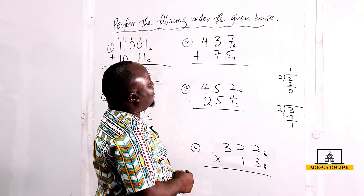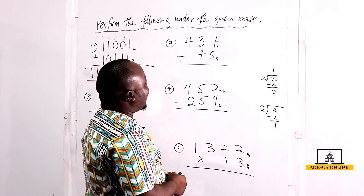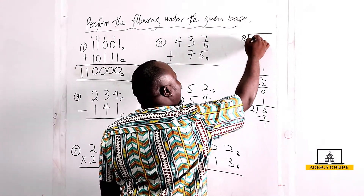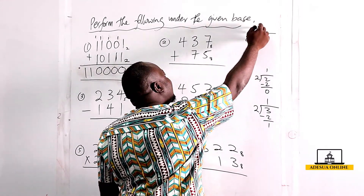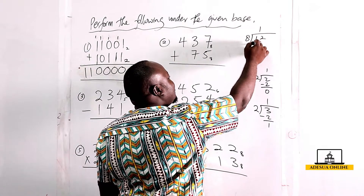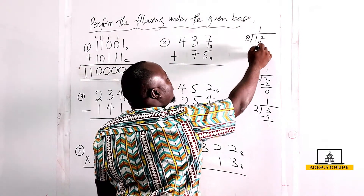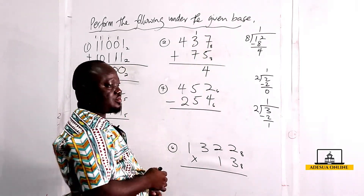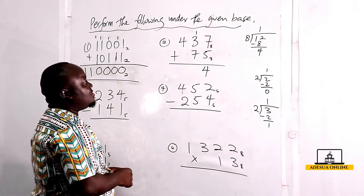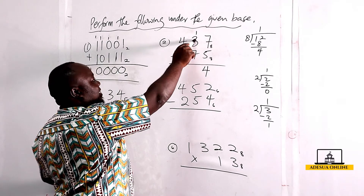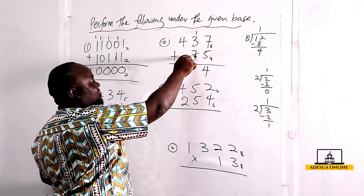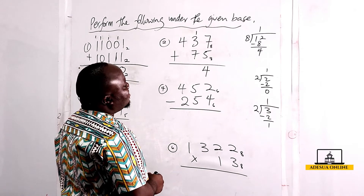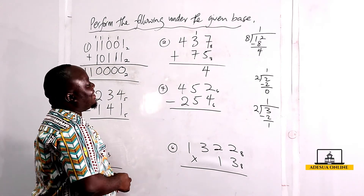We have to convert 12 to a number in base eight. Twelve divided by eight: eight goes into twelve once, twelve minus eight gives four, so we have four carry one.